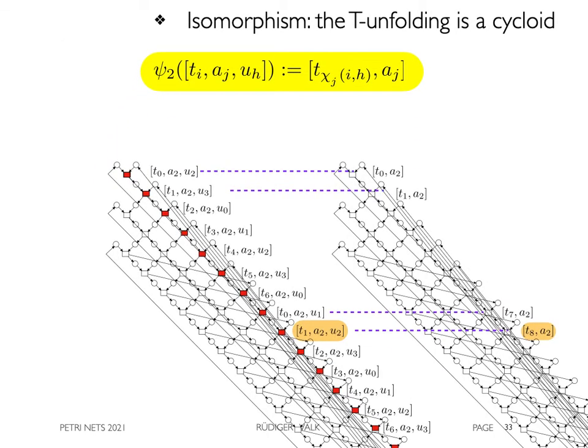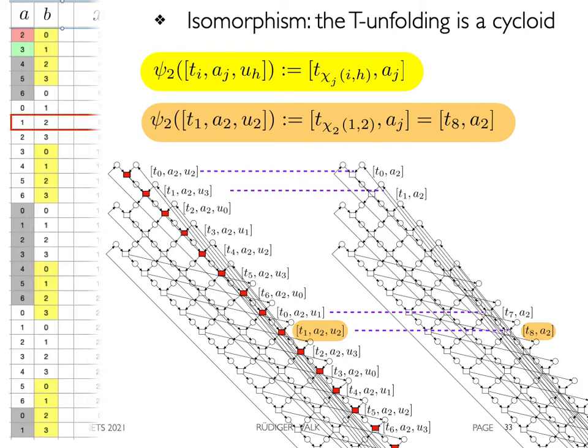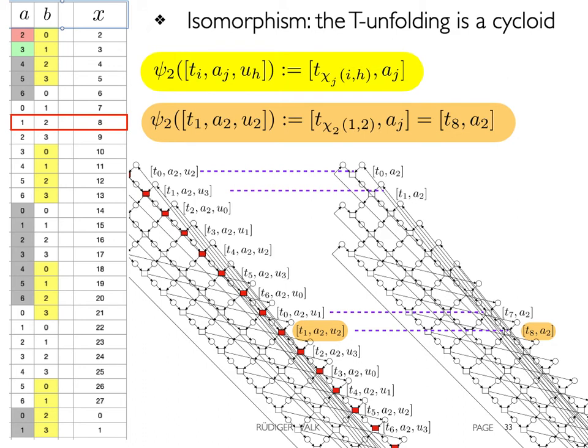For this transition of the example, the map becomes this instance. We obtain the transition t8, since the pair 1-2 maps to 8.